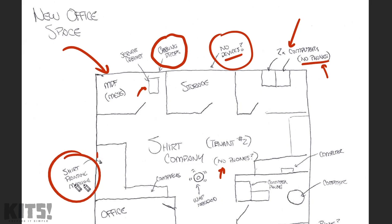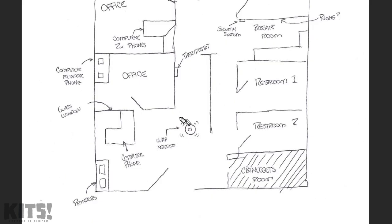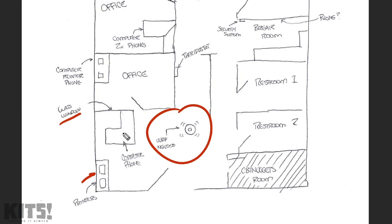Notice I also identified the shirt printing machine — because I don't know what that thing is. I think it might connect to the network; it looked big and had a screen, so maybe it's network compatible and I need to put a wall jack there eventually. I just want to identify it because it's a point of discussion. I identified the computer there, and I noted that a wireless access point is going to be needed. I identified the security system on the wall and the thermostat. I put 'phone — question mark' because that's a point of discussion. At the front of the building I identified the wireless access point needed up there, noted the glass window, the printers in the corner, and the computer and phone at the front desk.